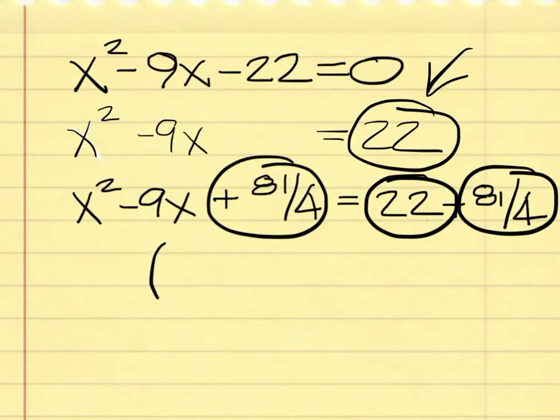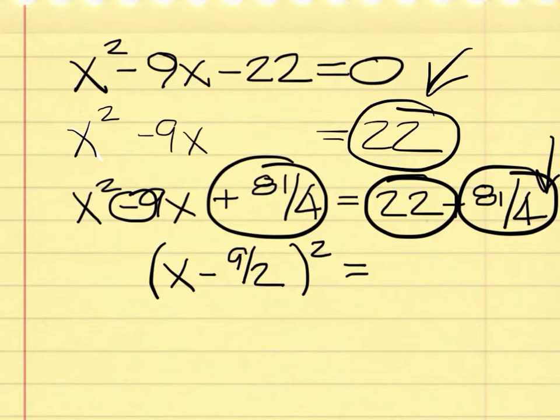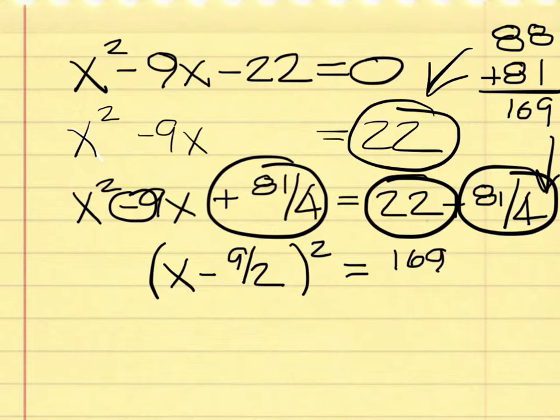Now we have to simplify. And on the left, we've made a perfect square. So that's x minus 9 over 2. You use x, the sign from the middle, and half of the middle term. And then you have to square that quantity. On the right, we have to have 22 plus 81 over 4. A common denominator is 4. So if I multiply 22 by 4, I'll get 88. So I would end up with 88 plus 81. And that is 169 over 4.